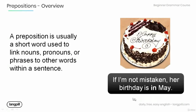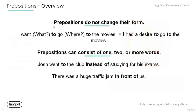noun 'May' to 'birthday' — her birthday. Note that prepositions do not change their form. Have a look at the example: I want to go to the movies, meaning I had a desire to go to the movies. Now, prepositions can consist of one, two, or more words. Have a look at the examples below.